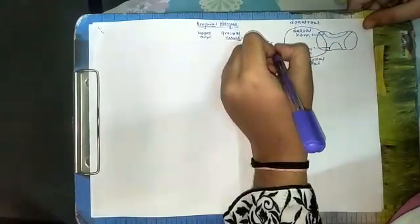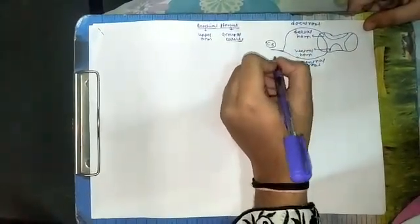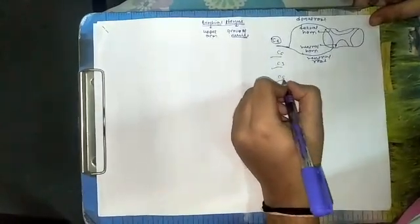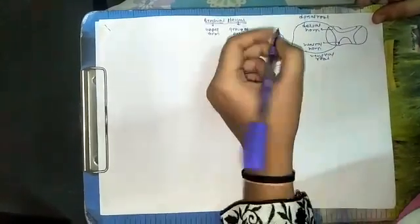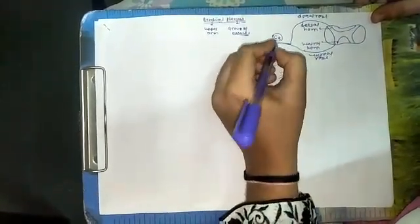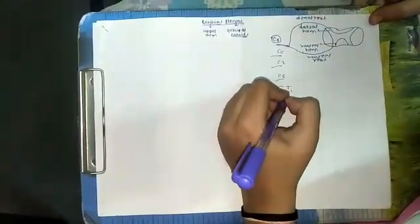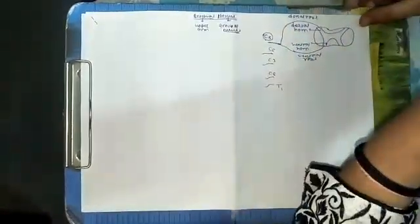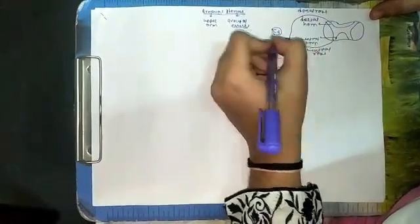Suppose this is a section at C5, this is C6, this is C7, this is C8, and this is T1. Now C5, C6, C7, C8, and T1 together constitute this plexus which is the brachial plexus — these nerves.